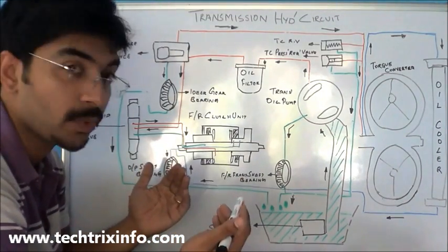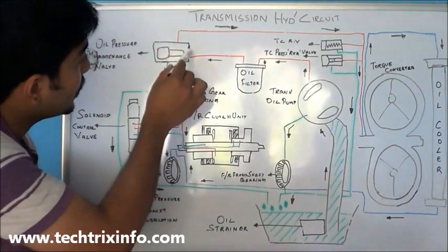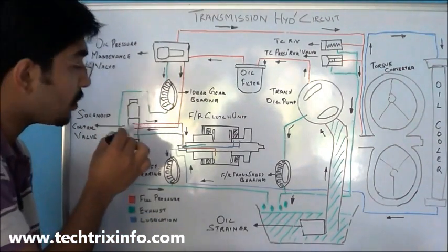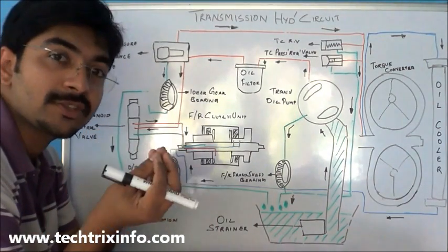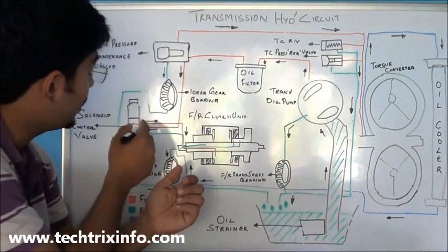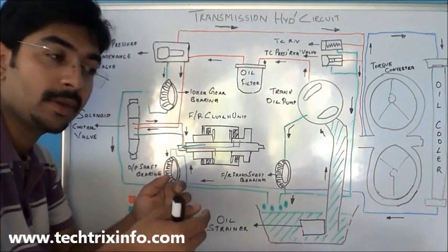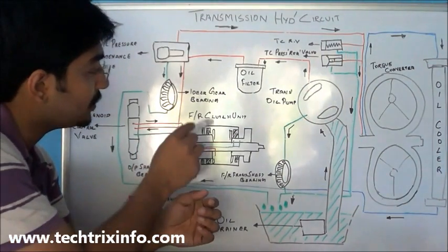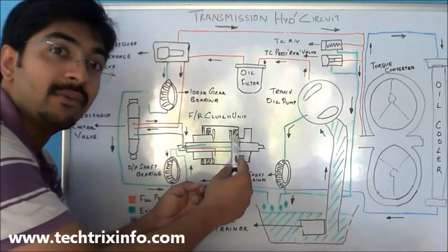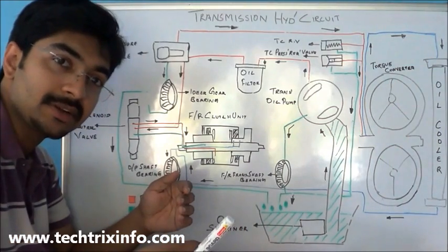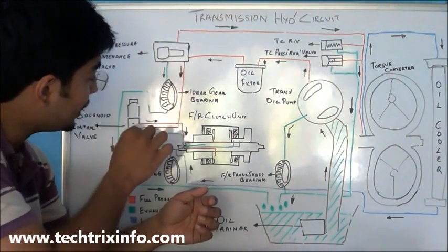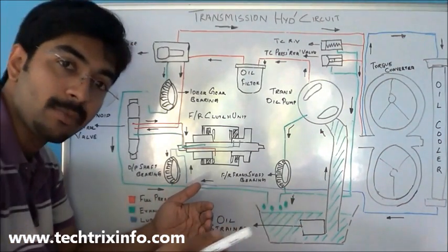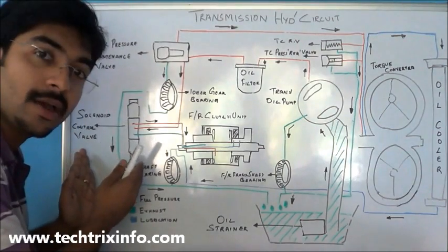Now let's look at the next circuit. There is a full pressure line coming from the pressure maintenance valve. This line comes and enters the solenoid control valve, which is electrically operated. The solenoid control valve assists the forward and reverse application. In construction equipment we have a forward and reverse switch — as we select the forward switch, the solenoid diverts the flow towards the forward reverse clutch unit so that the gears rotate in a way that the machine moves forward. That is what the solenoid control valve is doing.